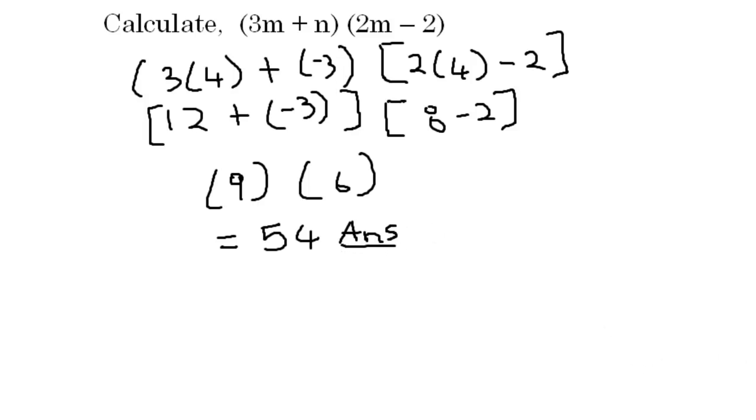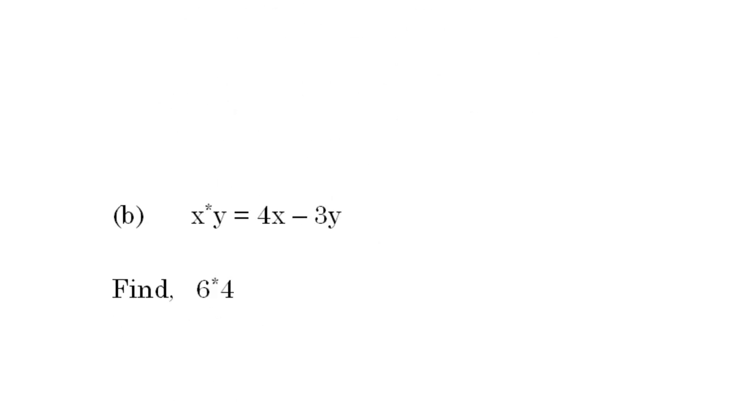Let's go to the next question. Part B says x asterisk y is equal to 4x minus 3y. It asks us to find 6 asterisk 4. Now this is saying that we're supposed to substitute 6 for x and 4 for y in the equation 4x minus 3y. That's what it means. That's what the asterisk here means.